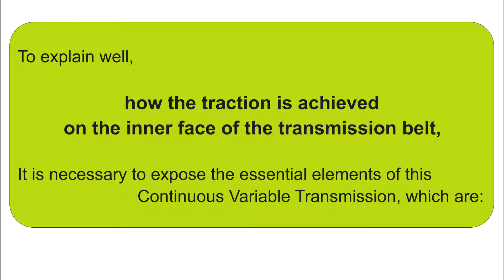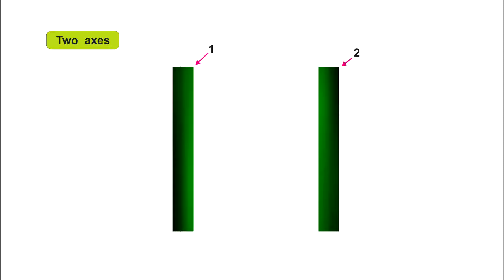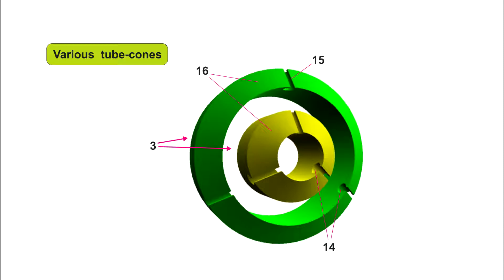The essential elements are two parallel axes, references 1 and 2, and various tube cones. Here you can see two tube cones, reference 3, of different diameter. They are called tube cones because they are tubes in which one of their sides has a conical shape, reference 16. The angle of inclination of this conical area will be the one considered appropriate in each case. The tube cones have internal guides, reference 14, with a groove in the conical area, reference 15. The number of these internal guides will be those deemed necessary in each case; in this specific case there are three.